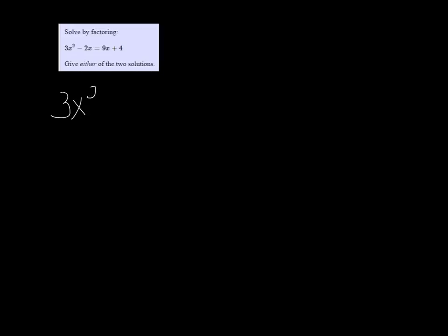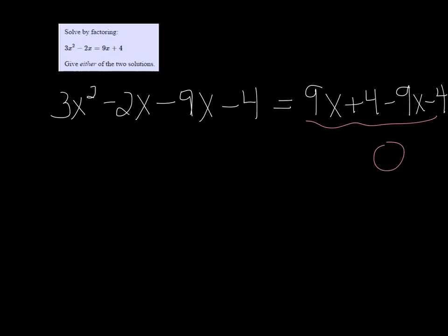So I'm going to subtract the 9x and the 4 from both sides. Okay, so you can see that I've taken it away on both sides. And on the right side now, I just have zero, which is what I wanted, and I can combine like terms on the left side and get 3x squared minus 11x minus 4.